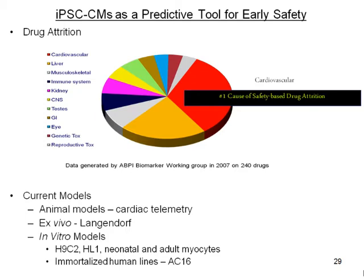Current animal models that have been used include cardiac telemetry models, ex vivo models such as the Langendorf, as well as in vitro models. A better predictive model will not only allow for a decrease in animal usage, but also a decrease in preclinical attrition rates.